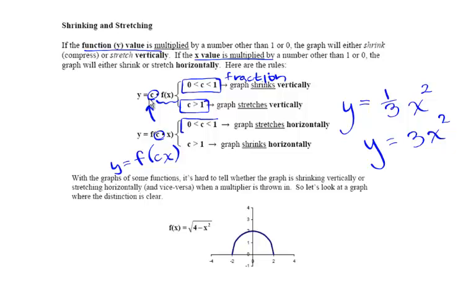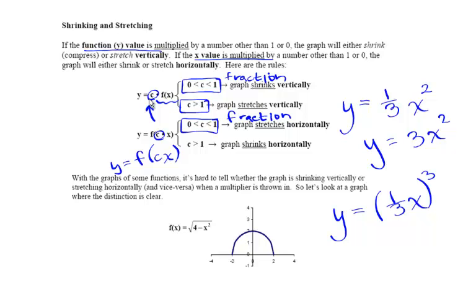Inside the function — horizontally — for a fractional value, if we have y equals one-third of the x value for the parent cubic function, that is going to produce a horizontal stretch, giving us a much wider function. If that constant value is greater than 1, that is going to give us a horizontal shrink.